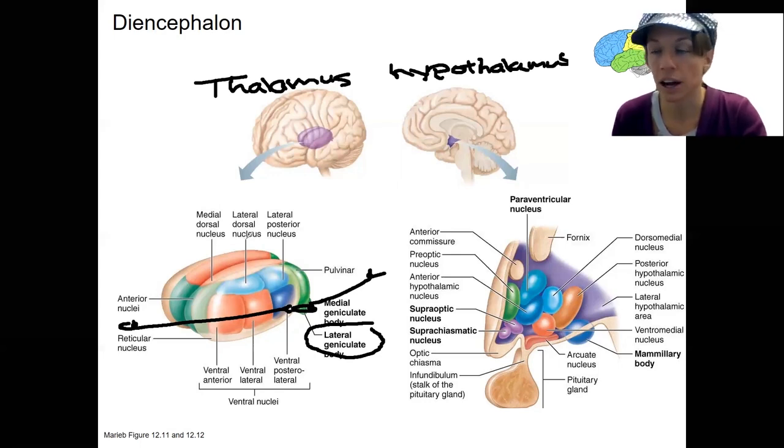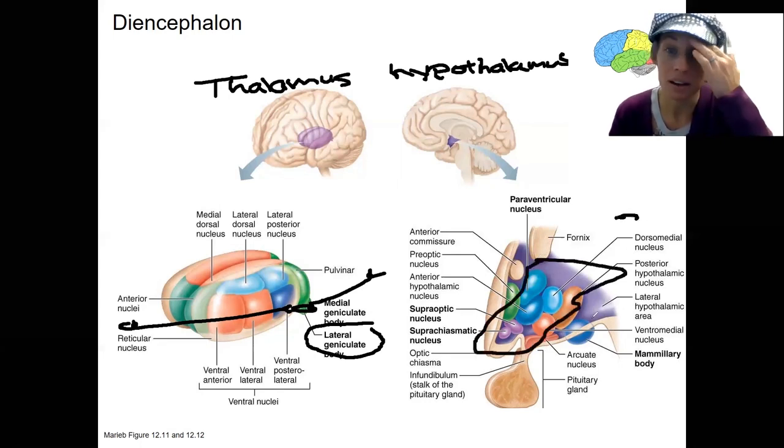So again, those are nuclei. The axons project to other brain regions. Then the hypothalamus is down here. So here's our hypothalamus just below the thalamus, which would be up here. And you can see connections to the pituitary gland.